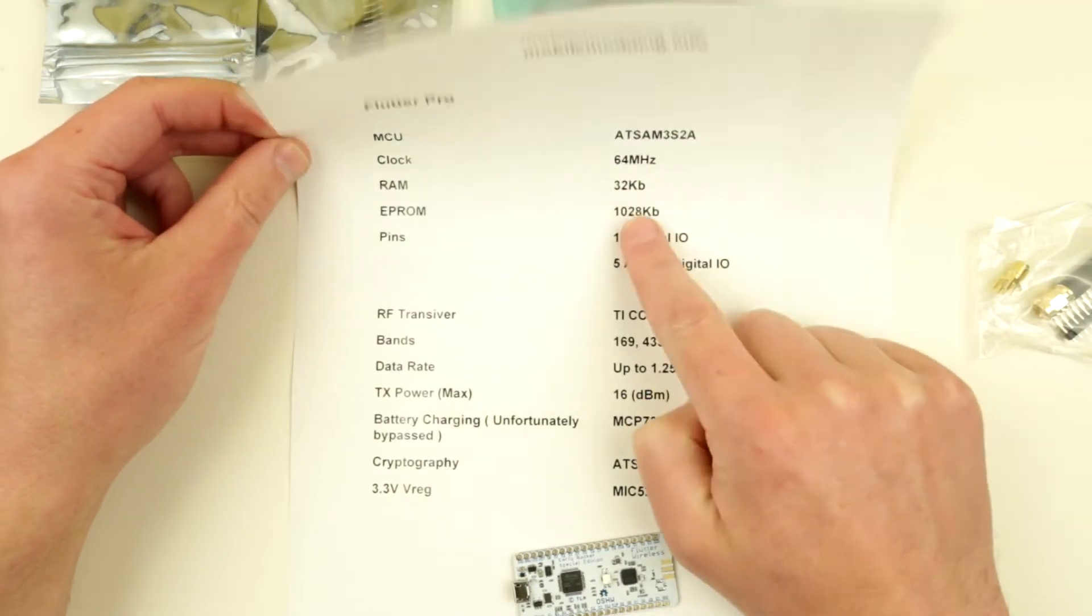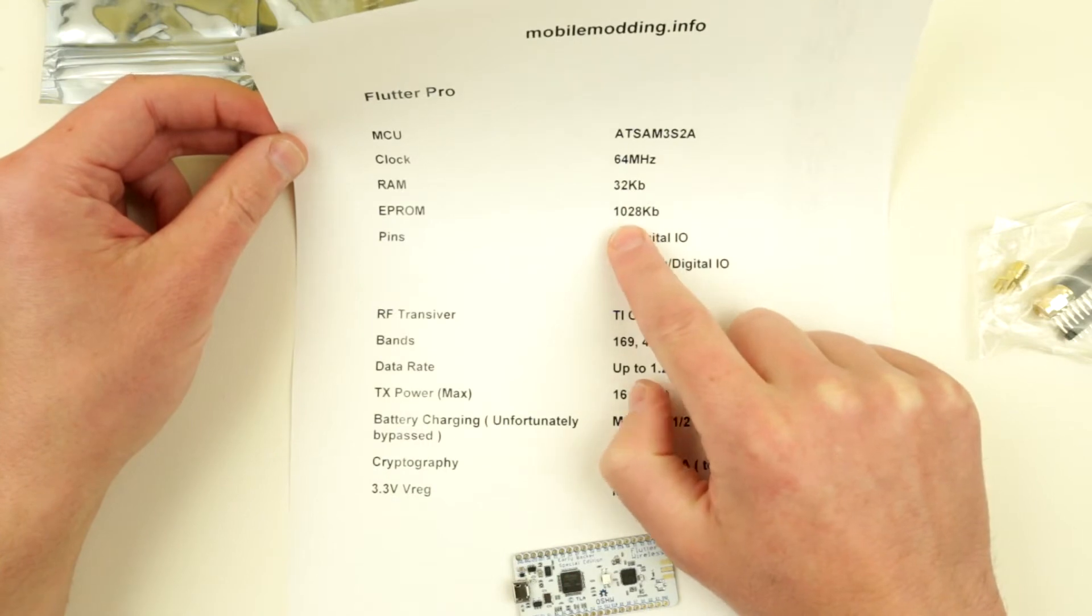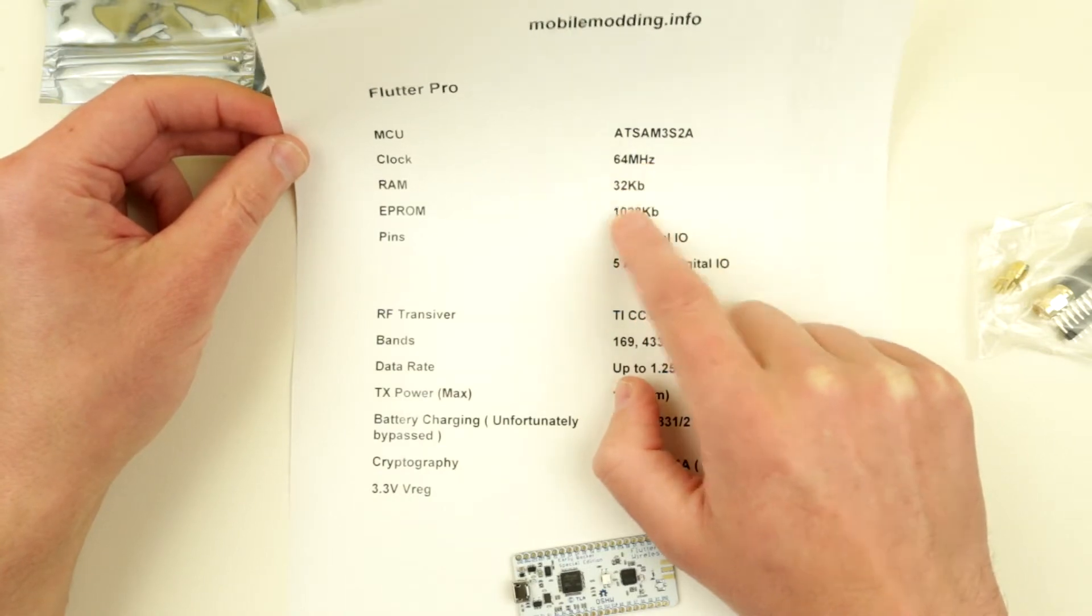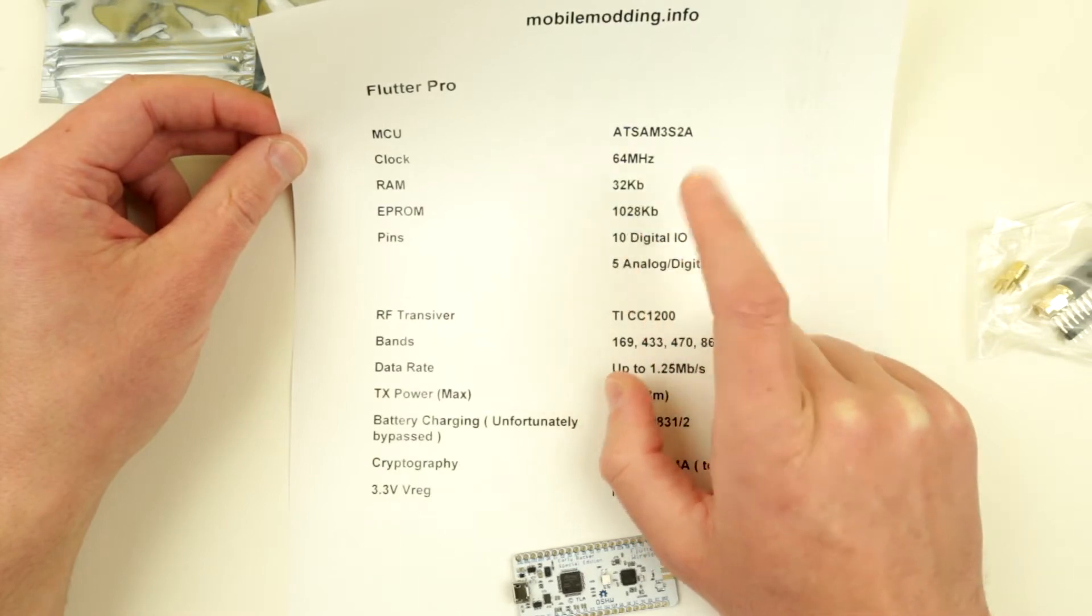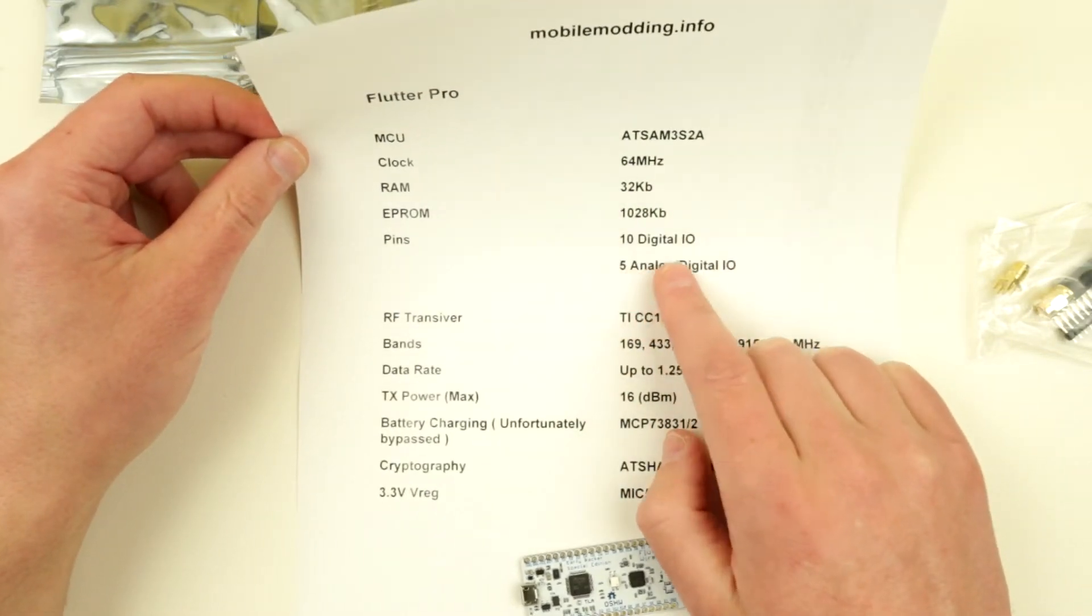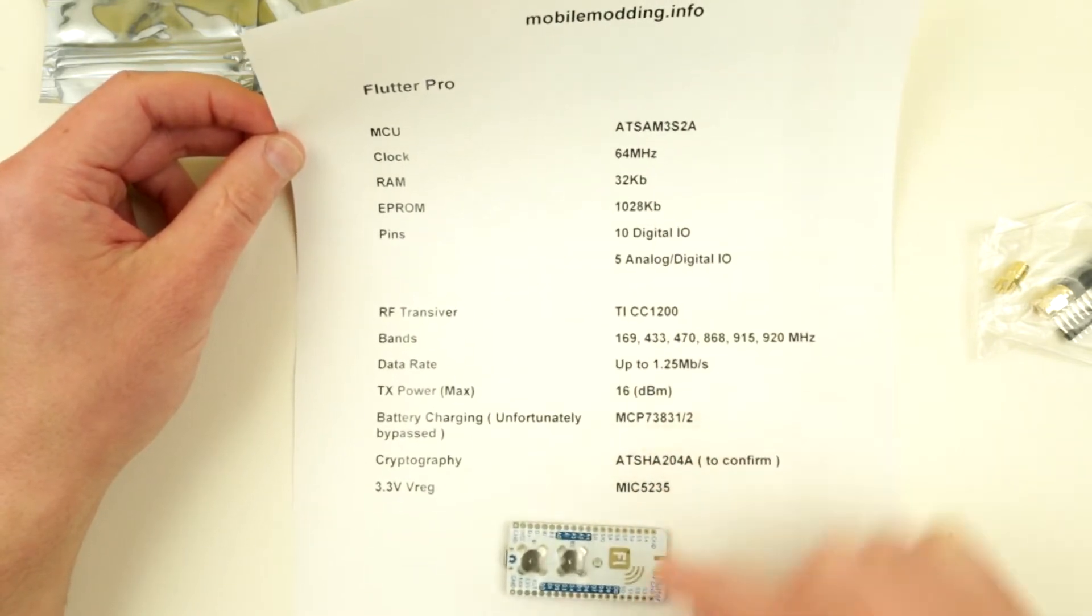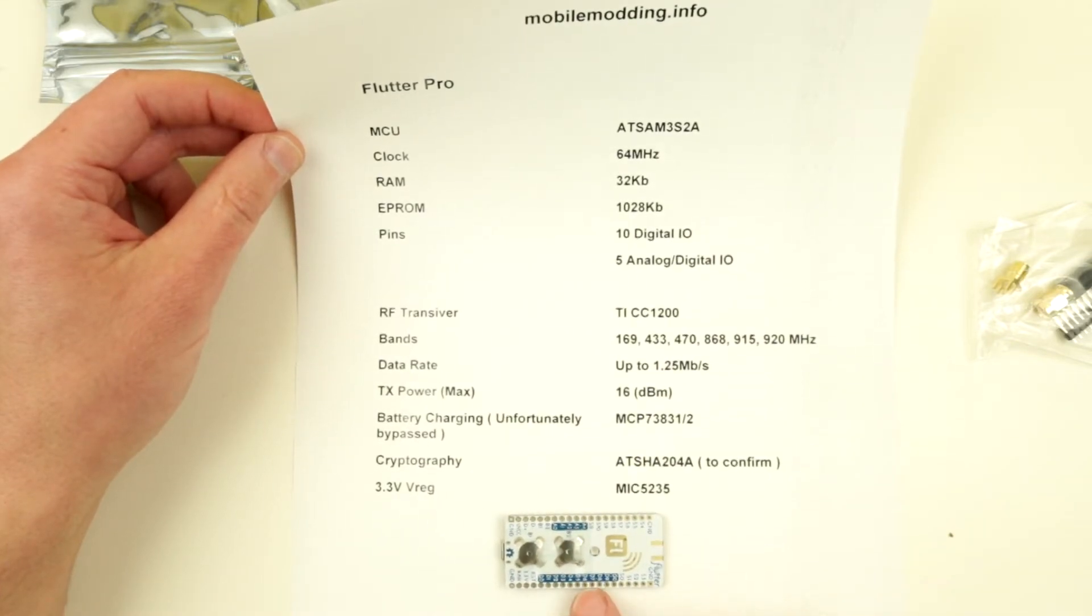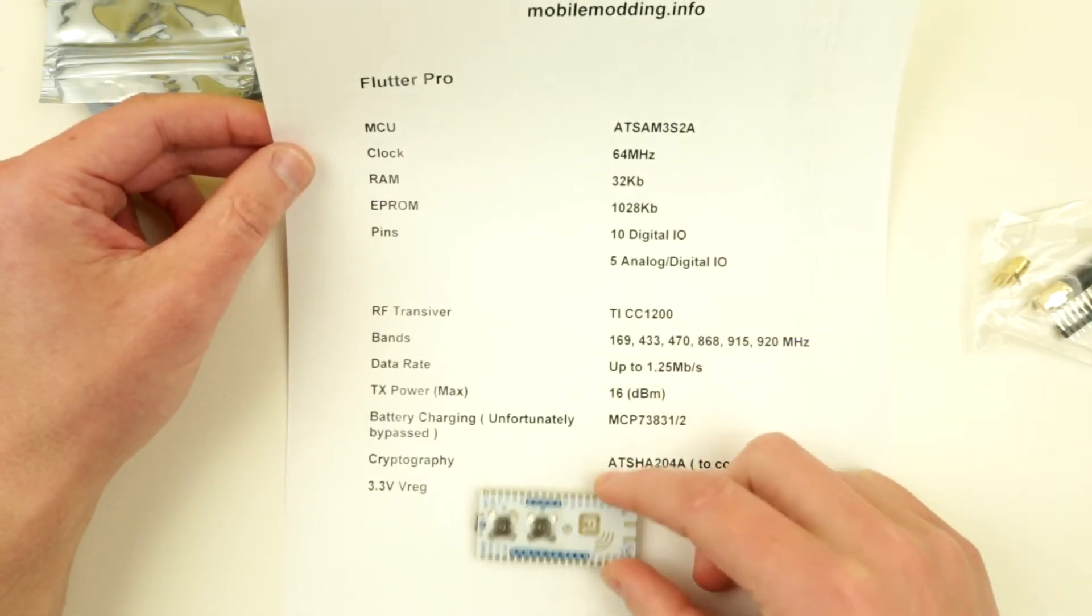What it is: it runs an Atmel SAM3S2A which runs at 64 megahertz. It has 32 kilobytes of RAM. Oh, it's a typo, sorry, it's not one megabyte, it's actually 128 kilobytes. Scratch that. It has 10 digital IOs and 5 analog digital IOs. You can see them over here, the blue or navy colored pins or headers, they are connected to the MCU.